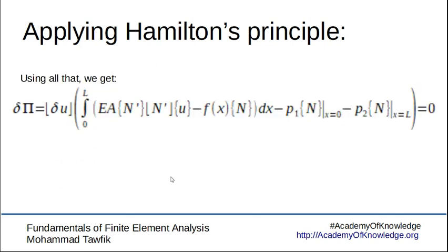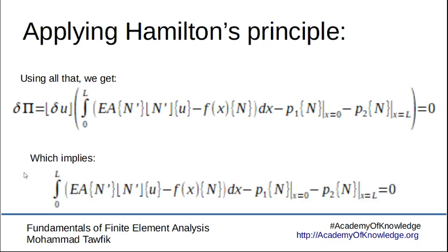We can now extract the variation of the degrees of freedom outside the bracket, leaving everything else inside — and that's exactly what we were looking for. If this expression equals zero, then either the variation is zero or everything inside the bracket is zero. The variation cannot be zero because that would only be the case if everything about the problem were already known. Since it's not, the variation remains arbitrary, implying that the bracket itself must equal zero.